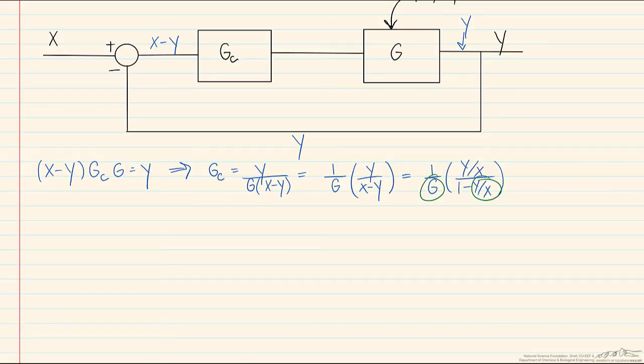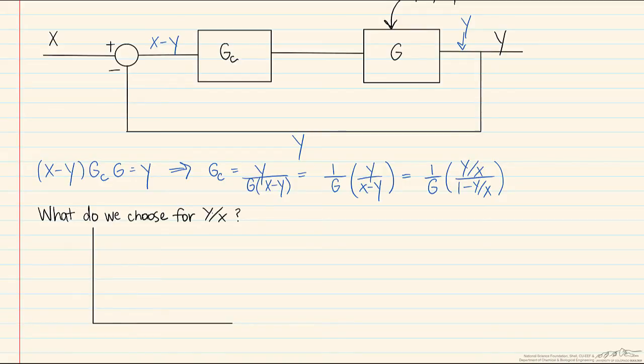So the question that we have to ask ourselves is, what do we choose for Y over X? And the answer to this is what we really desire here is a relatively simple type of response, and generally the most simple type of response we have is the well-behaved first-order transfer function, where Y over X equals 1 over (tau c s plus 1). So this is the transfer function that is ideally chosen because it's a smooth function, and it's one that can easily be used from an analytical standpoint.